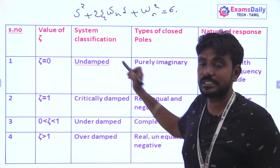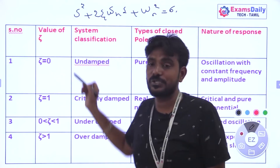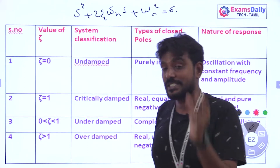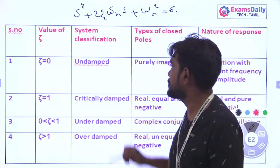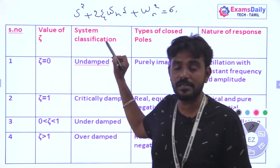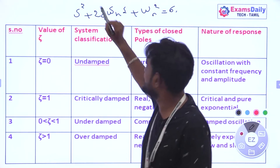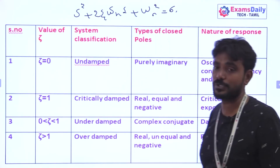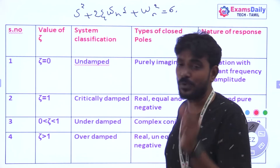First case: when Damping Ratio ζ equals 0, the system is undamped. The equation becomes S squared plus ωn squared equals zero. The poles are purely imaginary, meaning they lie on the imaginary axis.